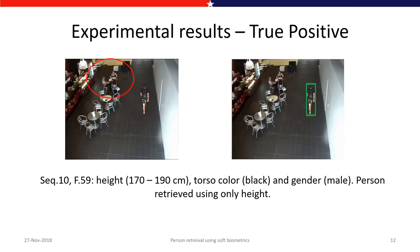Looking at the detailed experimental results using height, color, and gender as soft biometrics: on the left image, two persons are sitting and only one is standing, so the standing person is easily filtered using the height filter. On the right side, the person in the bounding box is detected using only the height query, which is 170 to 190 centimeters.